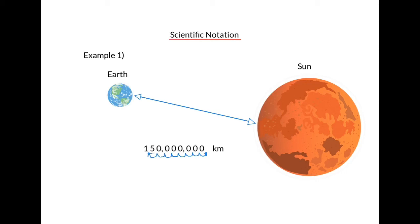So the decimal appears just to the right of the most significant digit. Then we write the non-zero digits with the decimal in between them and multiply by a power of ten, which would be ten to the eighth because we move the decimal over eight places to the left.